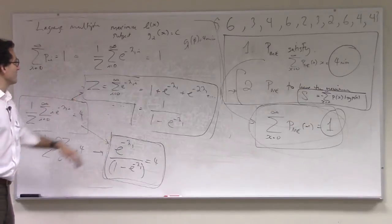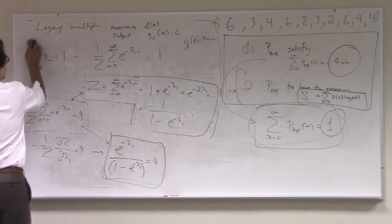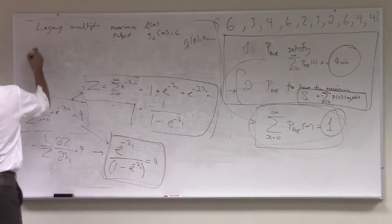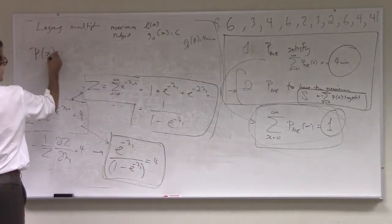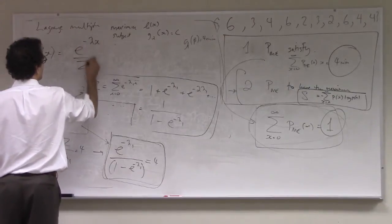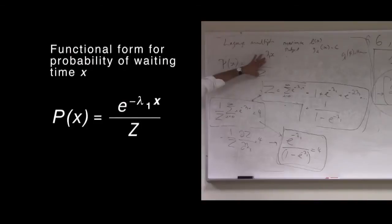And once we know both z and lambda 1, then we can recover not just the functional form of the probability of waiting for a time x, but actually we'll be able to compute the waiting time as a function of x, or the probability of a waiting time for a particular value.